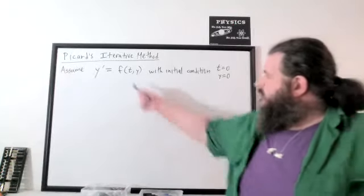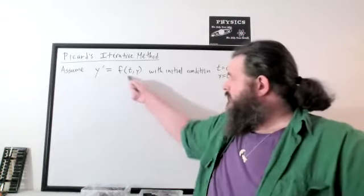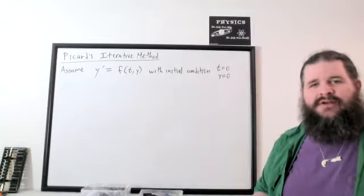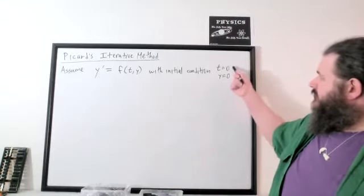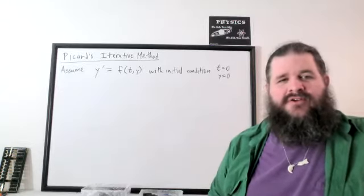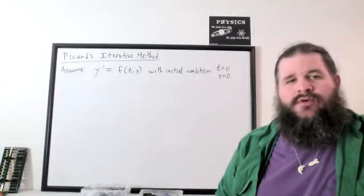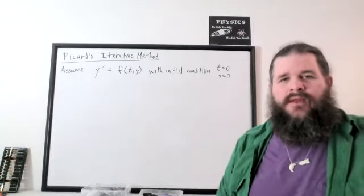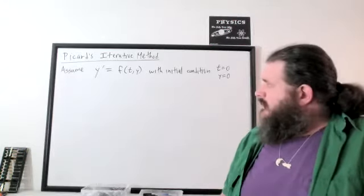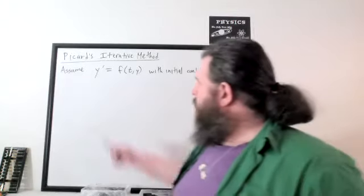The idea is we take this differential equation, as long as we've got a first-order equation that can be written as y prime equals something about t and y. So f of t and y is just the other side of the equation, with the initial condition at 0, 0. The method is basically standardized for assuming that the initial conditions are at 0, 0. If you have initial conditions somewhere else, you basically have to do a change of coordinates, a substitution to make it at 0, 0.